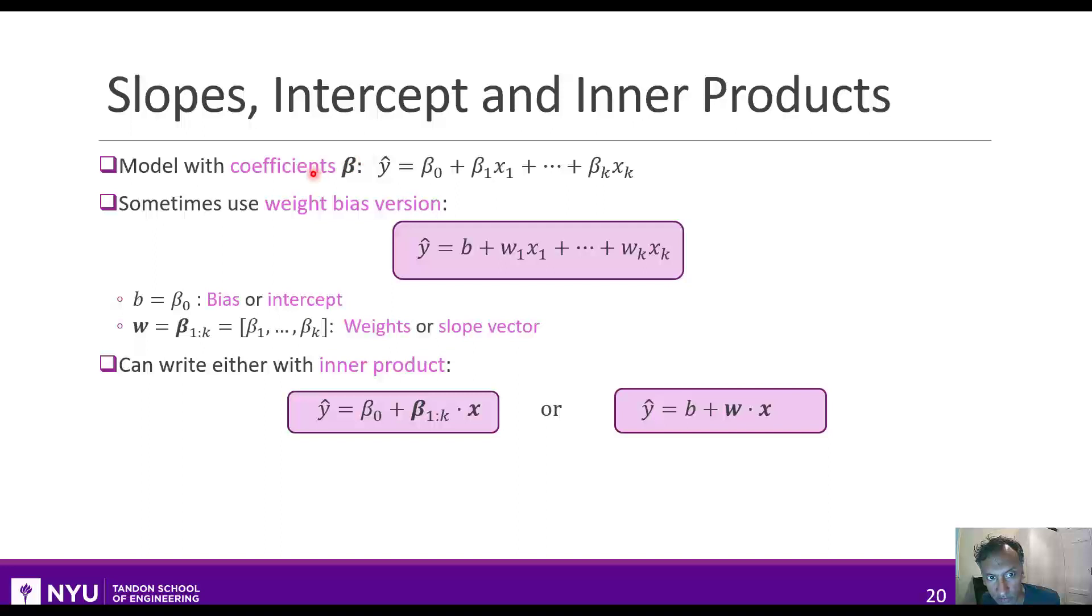Either way you write it, with either the coefficients or the weights and biases, you can write them as an inner product. For example, if you use the coefficient representation, you can say that y-hat is beta_0 plus an inner product between the k coefficients of beta and x. Or, in the weight bias version, it's b plus the weight vector inner product with x. Recall that the inner product between two vectors is just the sum of the products of their coefficients. You can also see the inner product written with alternative notation as w transpose times x, or sometimes with this bracketed notation. All of these are just different notations to describe the same idea.